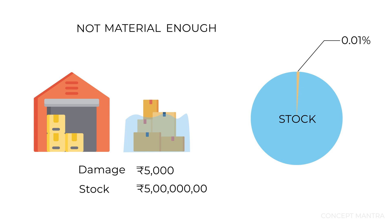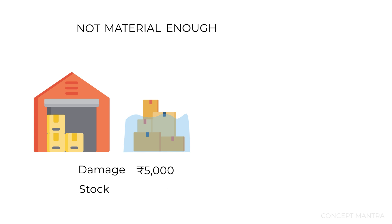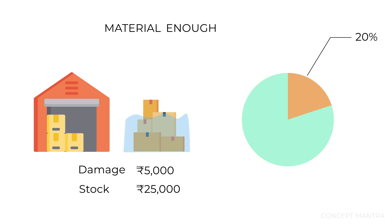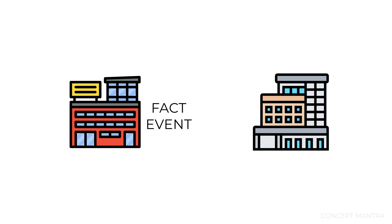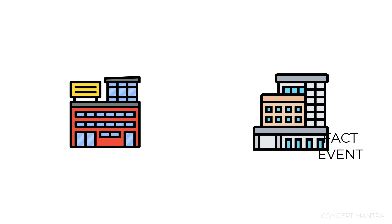However, for a company which has an entire stock of Rs. 25,000, a damage of Rs. 5,000 is material enough. This tells us that a fact or an event can be material to one company and immaterial to another at the same time.